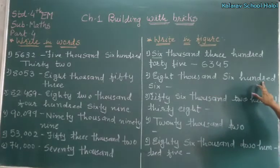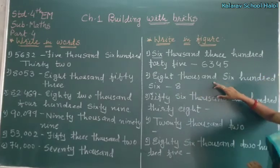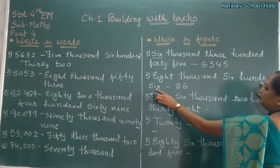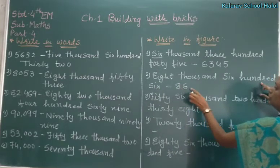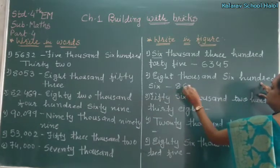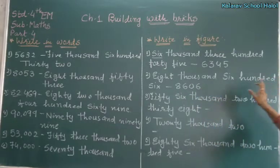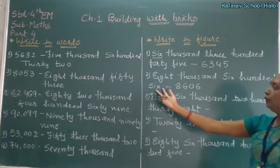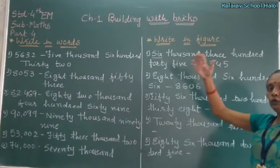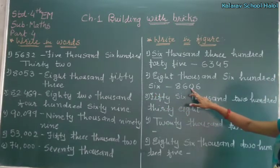Eight thousand six hundred six — 8,606. Now see, 8,000, then 600. Now only 6. We know that 1,000 is a 4-digit number, so here only 6 is a 1-digit number, so tens place has 0, and then 6. So it is 8,606. Understand? If it were 64 it would be 2 digits, but only 6 is a 1-digit number, so tens is 0.